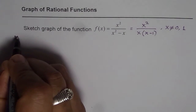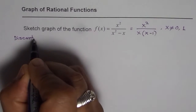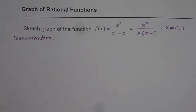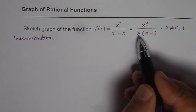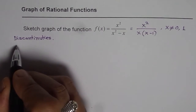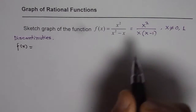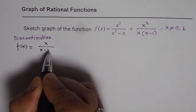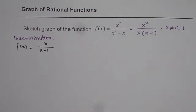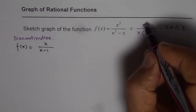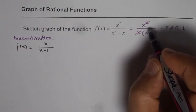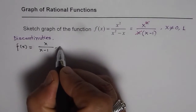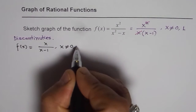We'll analyze these discontinuities to start with. As you can see, we have a common factor in numerator and denominator, so we can cancel out x and write this function as f(x) = x over (x minus 1). The discontinuities will be at x = 0 and x = 1.